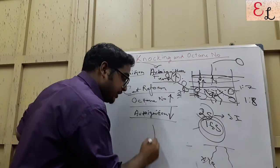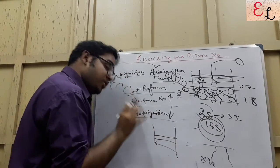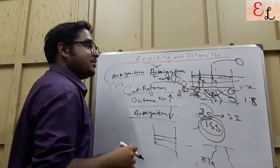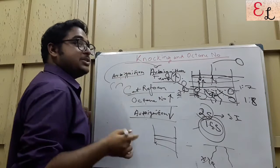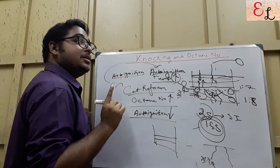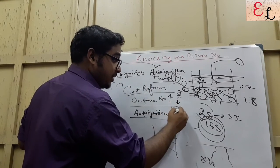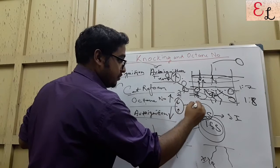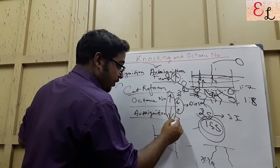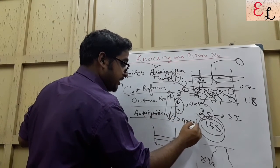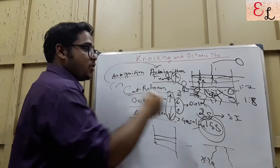Whereas with a diesel engine, it is desired that auto-ignition takes place easily because there is no spark ignition — auto-ignition has to take place. Thus diesel is always of a lower octane number, to undergo easy auto-ignition. Octane number is high and auto-ignition tendency is low for gasoline, because we want spark ignition — we do not want auto-ignition after driving for 2 or 3 hours. We do not want knocking to take place.